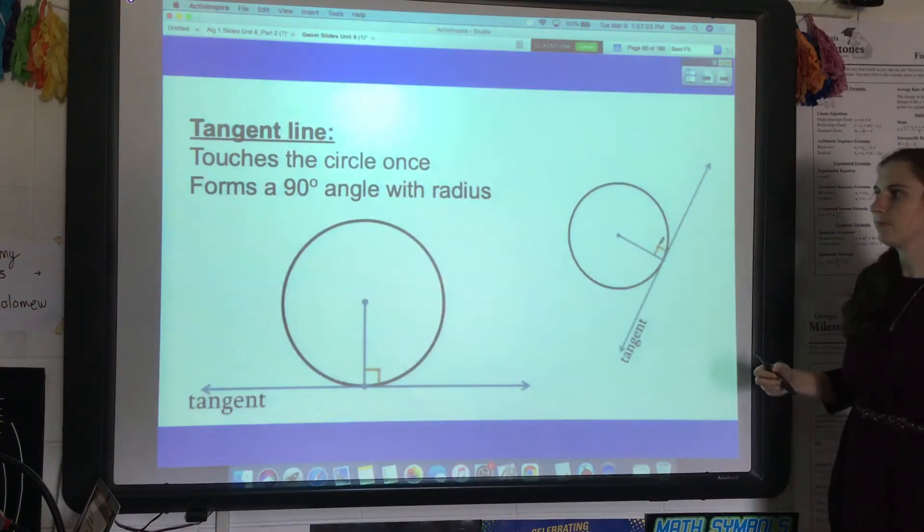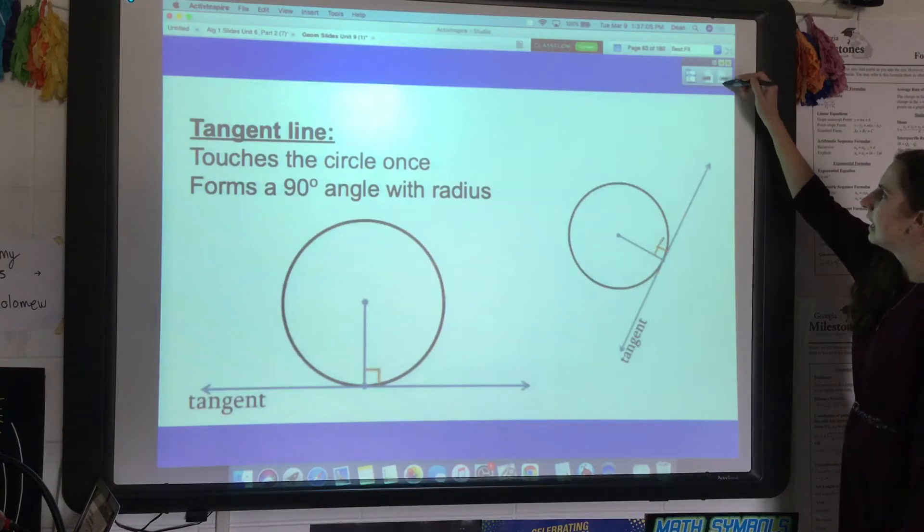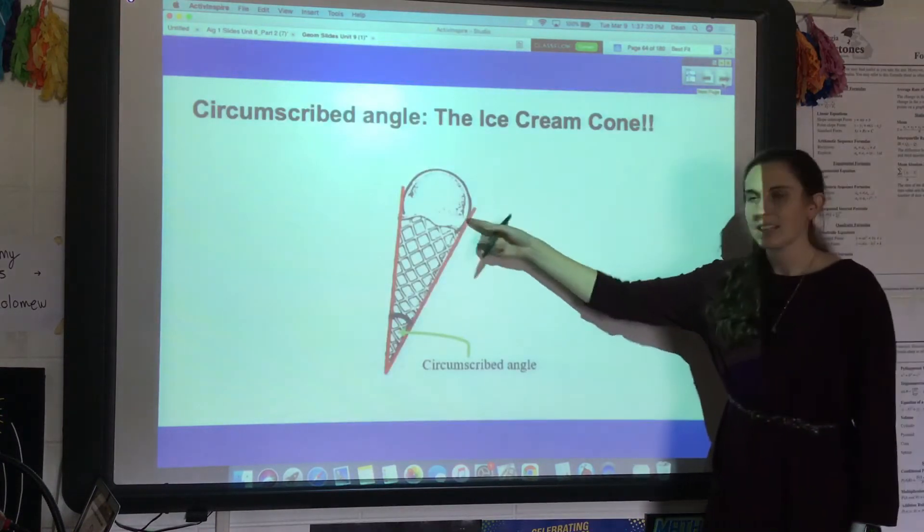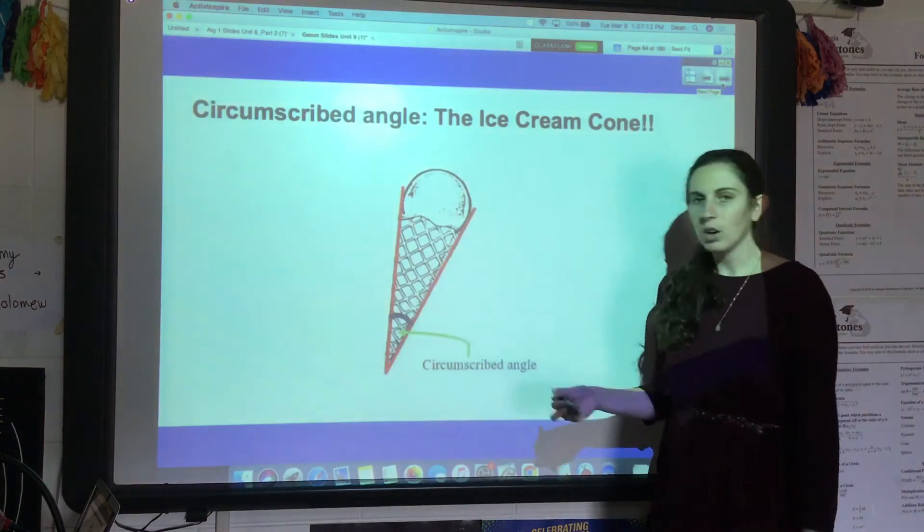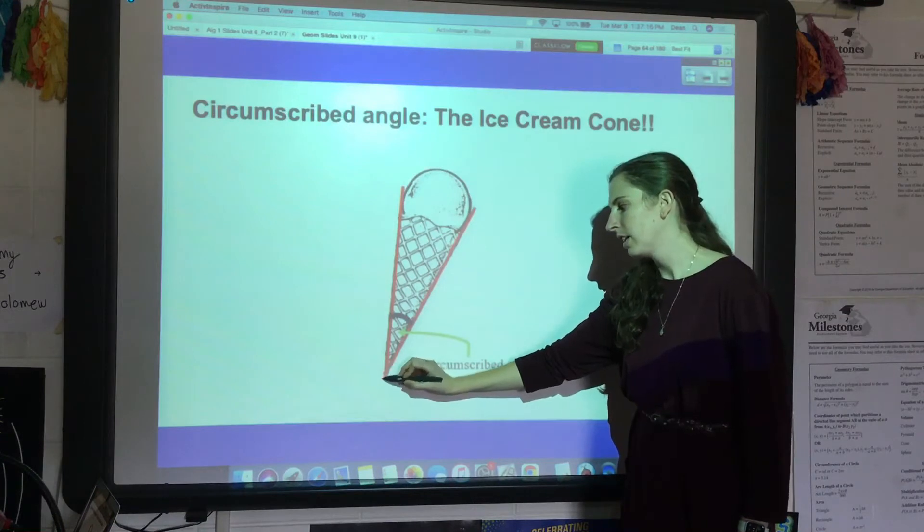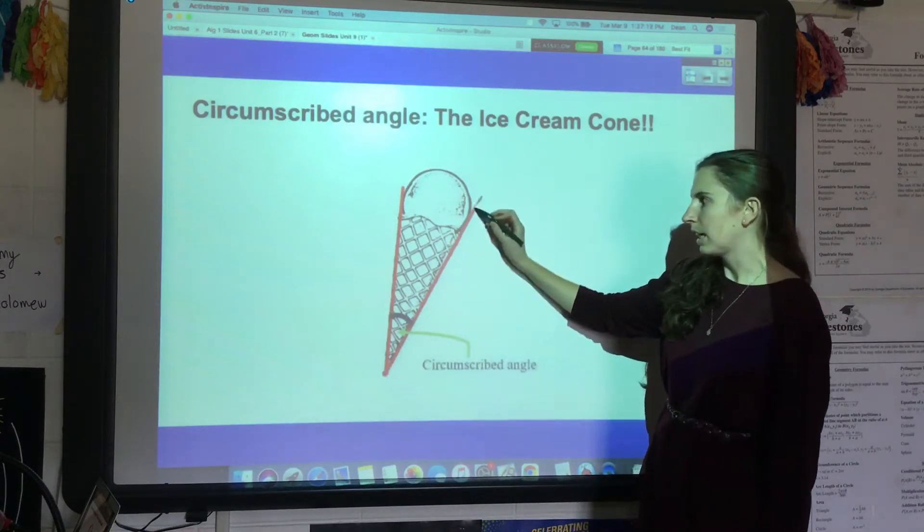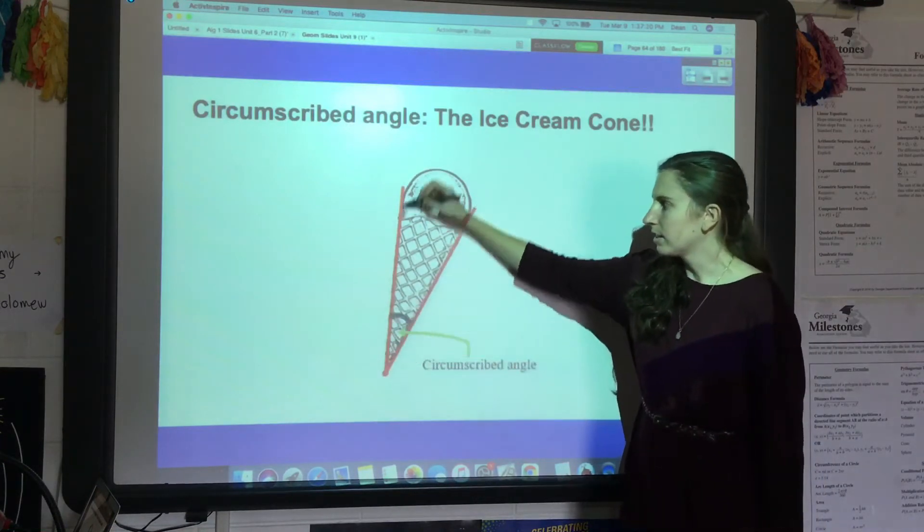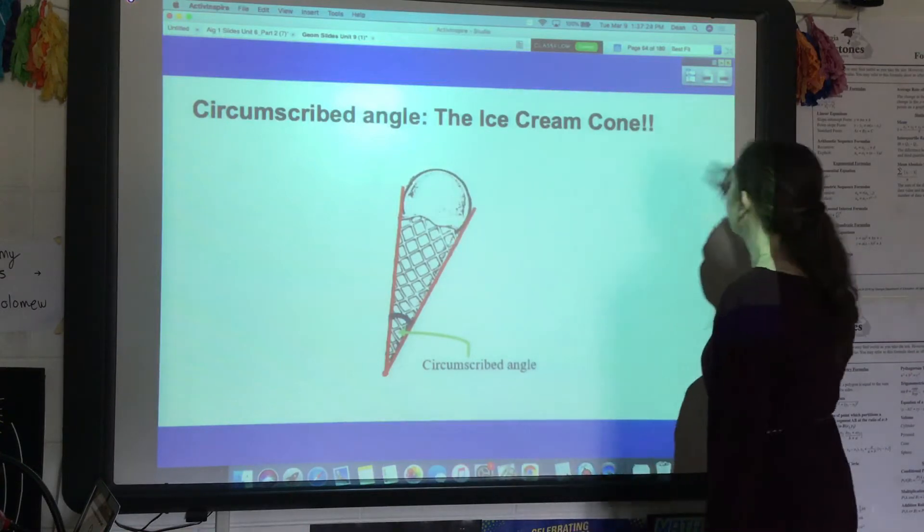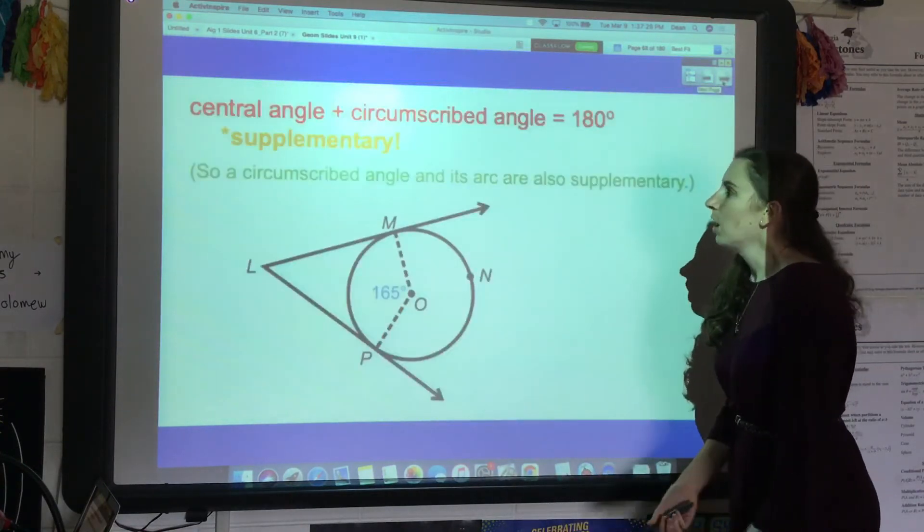So keep that in mind as we talk about circumscribed angles. There are only two tangent lines we could draw to the circle from this point: we could draw a line on this side of the circle and on this side of the circle, and there's no other tangent lines I could actually draw.